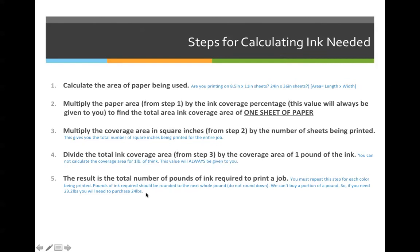Step 5: the answer is the total number of pounds required to print the job. However, you cannot purchase part of a pound of ink, so no matter what the answer is, you round it up to the next whole number. If it comes out to 24.01 pounds, the answer would be 25 pounds.